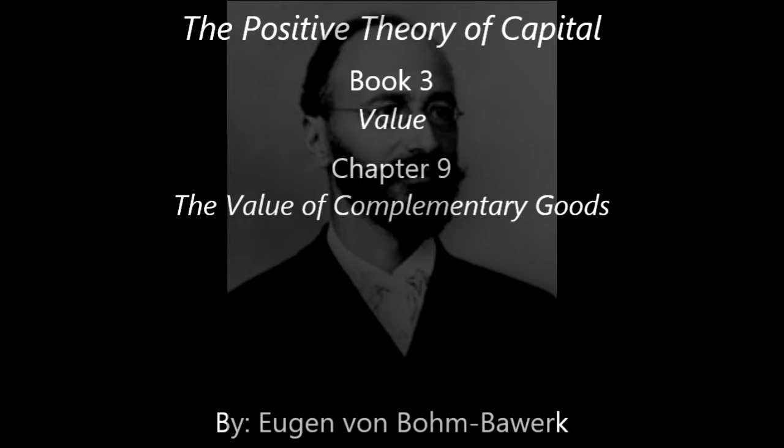Third, and more common still, is the case where some individual members of the group are not only employed for other purposes, but are at the same time replaceable by other goods of the same kind. For instance, building ground, bricks, beams, and labour are complementary goods in the building of a house. But if a few cars of bricks intended for the building go astray in transit, or some of the labourers engaged for the job refuse to work, in normal circumstances this does not in the least hinder the obtaining of the joint utility. The bricks, the labourers, and materials are simply replaced by others.